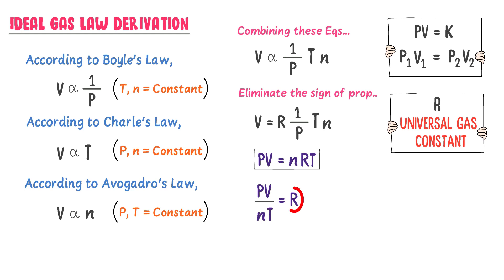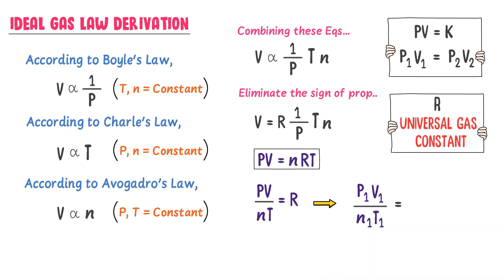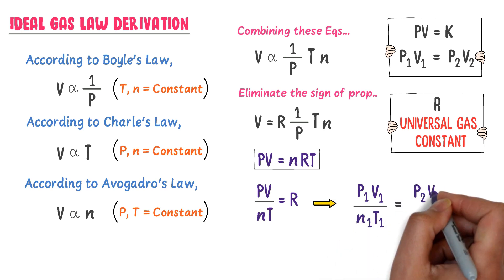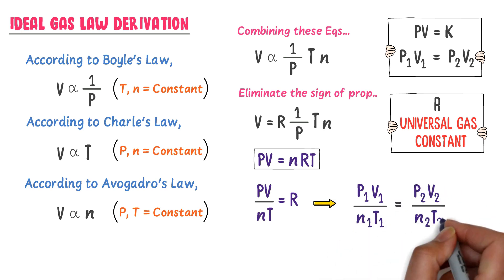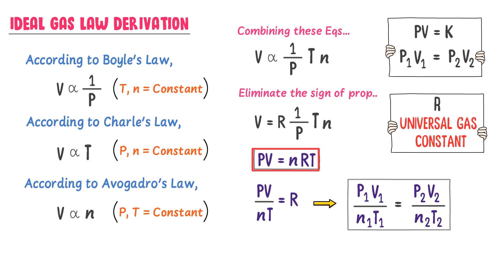Similarly, since R is constant, we write P₁V₁/N₁T₁ = P₂V₂/N₂T₂. Remember that we will often use the equation PV = NRT and the combined equation P₁V₁/N₁T₁ = P₂V₂/N₂T₂. Let's note down both equations.